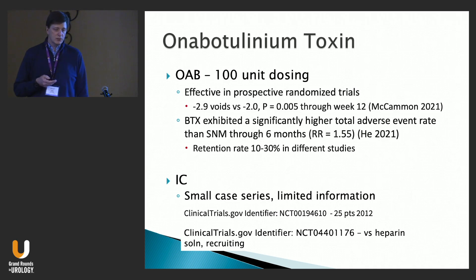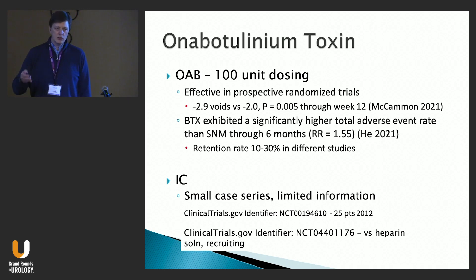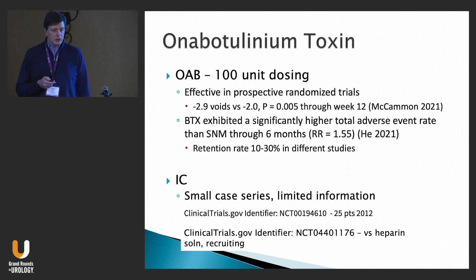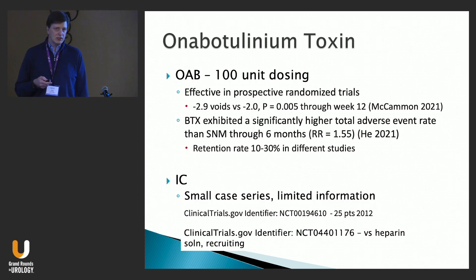Botulinum toxin at 100 units has good data for OAB — nearly three fewer voids per day versus two on placebo. A 2021 study shows higher adverse event rates within the first six months, mostly infection and retention. Botox lasts approximately three to twelve months, requiring multiple injections, which patients need to understand. For interstitial cystitis, there are almost no efficacy studies — likely because it's not insurance-approved when coded for IC. One 2012 trial enrolled 25 patients with unclear outcomes; one clinical trial is comparing it to instillation. Use with caution.